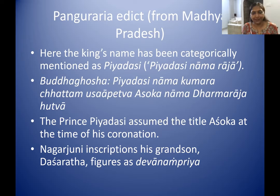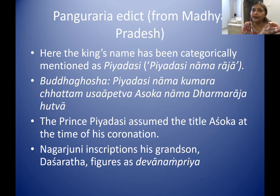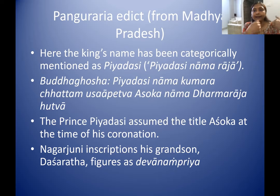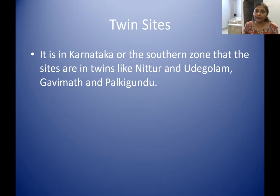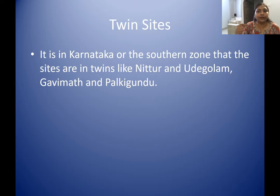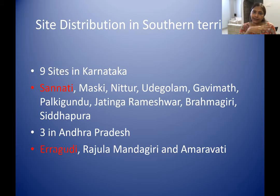This is corroborated by the Nagarjuna hills inscriptions issued by Dasharatha, Ashoka's grandson. Dasharatha's inscriptions read 'Devanang Piyadasi' then directly 'Dasarathena' — 'Devanang Piyadasaratha' — showing Piyadasi is a dynastic epithet, not just personal. In South India particularly, all minor rock edict sites come almost in twin pairs: Nittur has a twin in Udagala, Gavimath has a twin in Palkigundu, and Brahmagiri has a twin in Siddhapur.